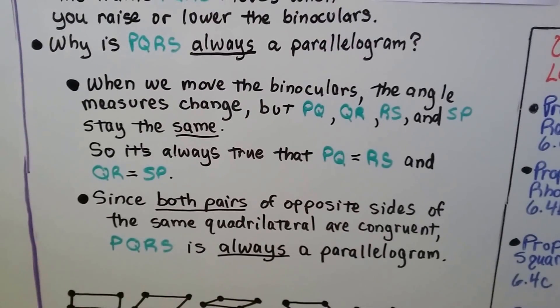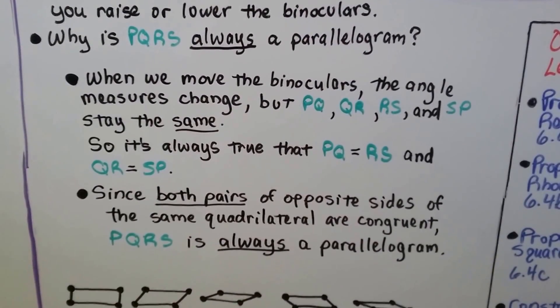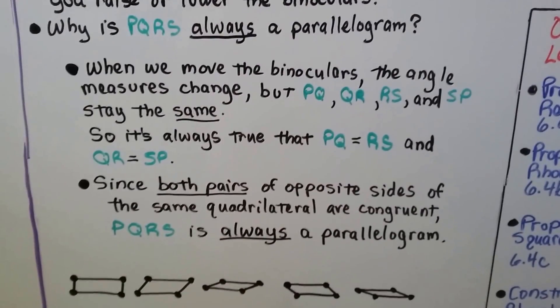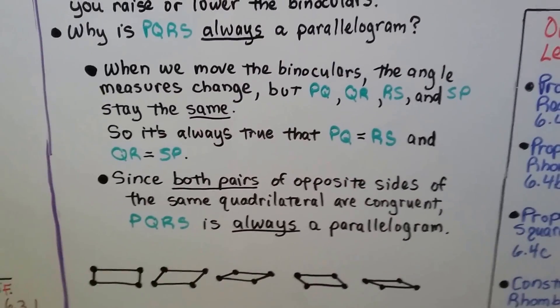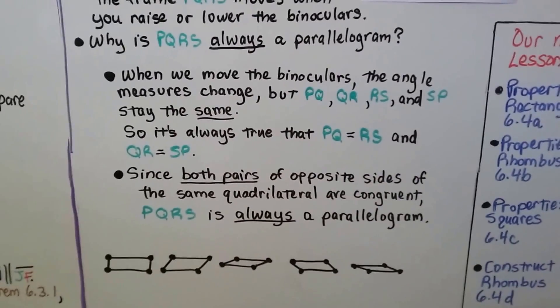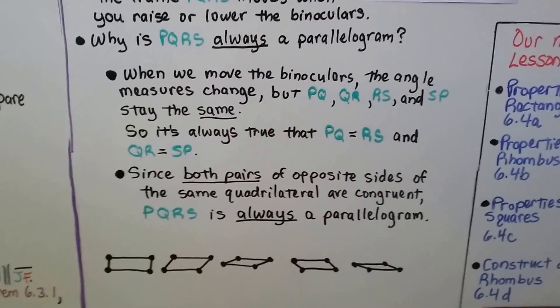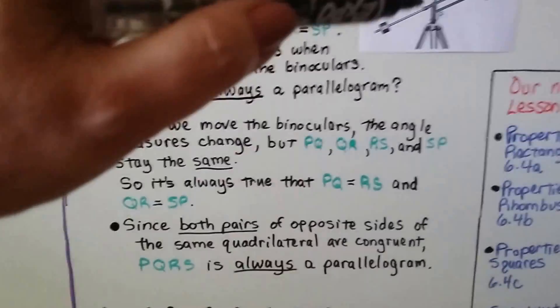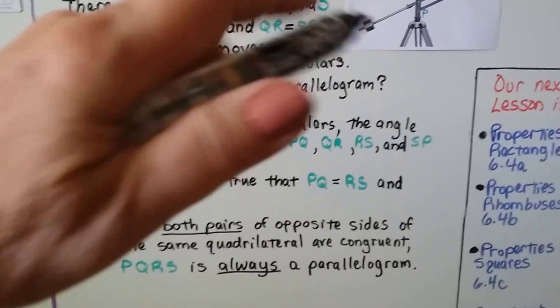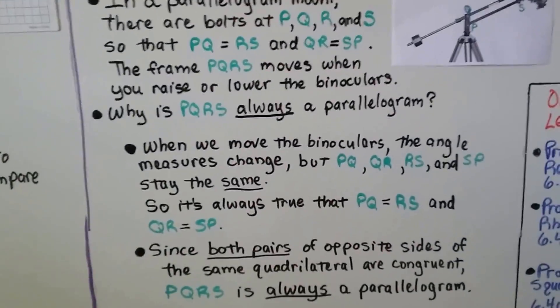So that's the definition. Both pairs of opposite sides are parallel. And from our second theorem that said both pairs of opposite sides are congruent. So because of the bolts that are in here, they're always going to be parallel because of the way it moves.